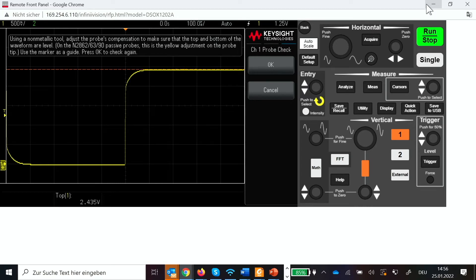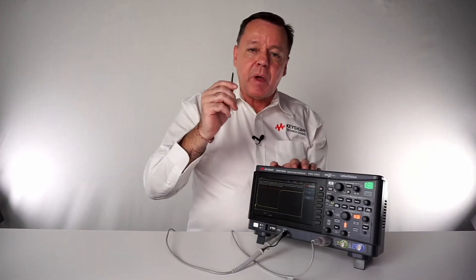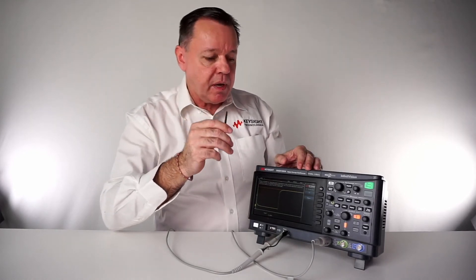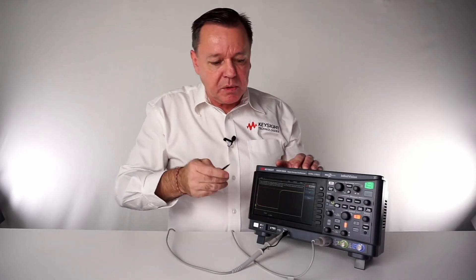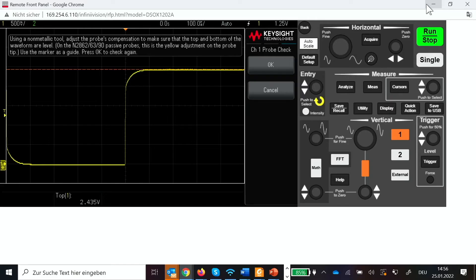And again we use the tool that is very important – it's a plastic probe screwdriver, not metalized. This comes with all the probes included with the oscilloscope. So now we adjust that.